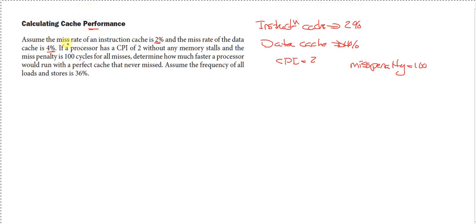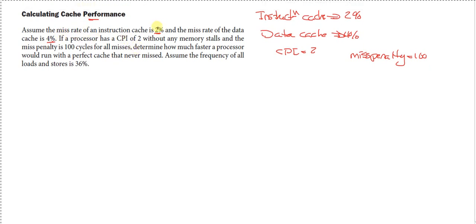Here we assume that the miss rate for the instruction cache is 2% and the miss rate for the data cache is 4%. In case we have different miss rates for instruction cache and for data cache, we calculate them separately.